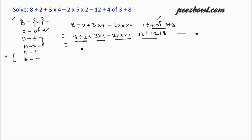Let us see how we do it. 8 divided by 2 is 4, plus 3 multiplied by 4 is 12, minus 2 multiplied by 5 is 10, 10 multiplied by 2 is 20, minus 12 divided by 12 is 1, and last we have 8.